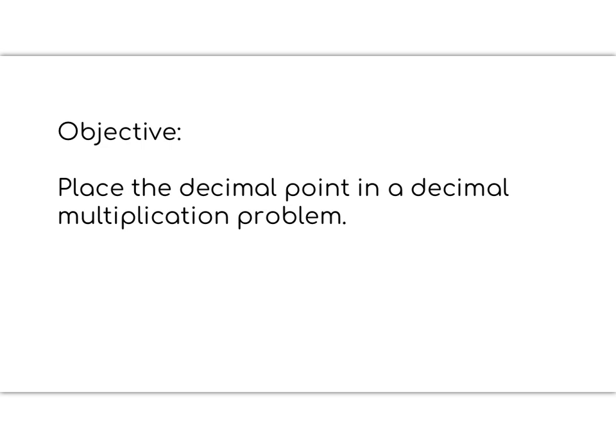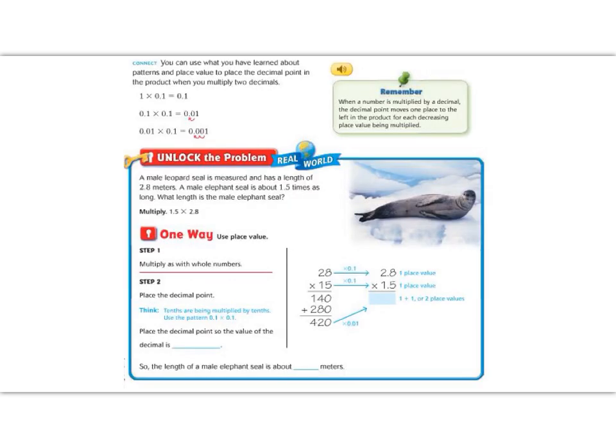In today's unlock the problem, we are going to be working on multiplying decimals. We start at the top with a pattern of decimals that we have learned previously. If we multiply 1 times 0.1, then our decimal stays the same because of the identity property.